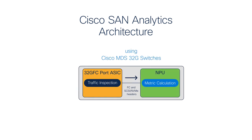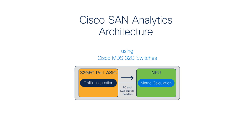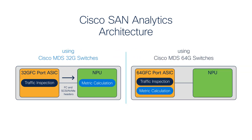So what's the secret sauce that provides analytics into a billion IOPS per module? Let's take a step back to remember the SAN analytics architecture on the 32-gigabit MDS switches, where the port ASICs inspect the traffic and an onboard network processing unit calculates the metrics. In the 64-gigabit MDS switches, the port ASIC combines both traffic inspection and metric calculation.